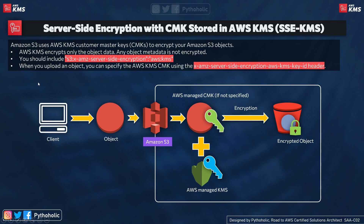A few important points about SSE-KMS: AWS KMS encrypts only the object data — any object metadata is not encrypted. You should always include the header 'x-amz-server-side-encryption: aws:kms'. When uploading an object, you can specify the AWS KMS CMK using the 'x-amz-server-side-encryption-aws-kms-key-id' header, where the key ID is your CMK ID.